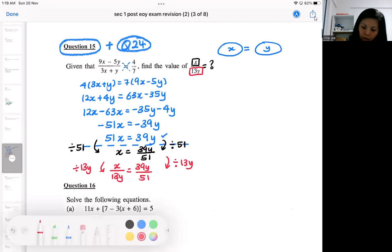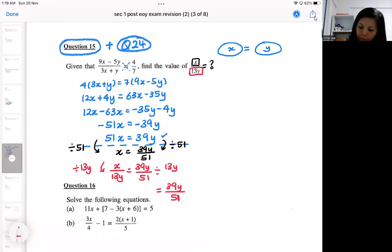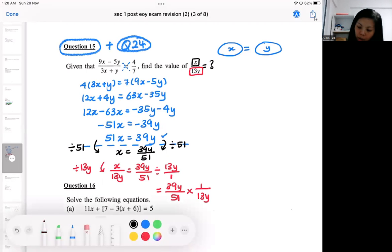Okay, so I think I need the space. So we're going to divide by 13Y, which will become one over 13Y. So that will help you to cancel and you can punch calculator.